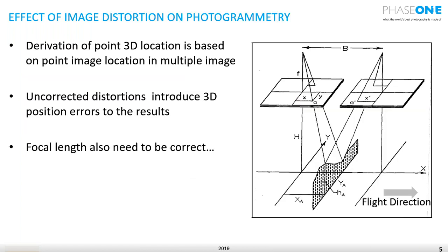Why do we mind? We mind because the deviation of a point's 3D location is based on its image location in multiple images. If this x does not represent the correct measure, then the xa will not come up correctly. Moreover, if there is a difference in how wrong this x is from x-tag, then this location will be wrong. So we have to correct x and y to correctly represent real life.